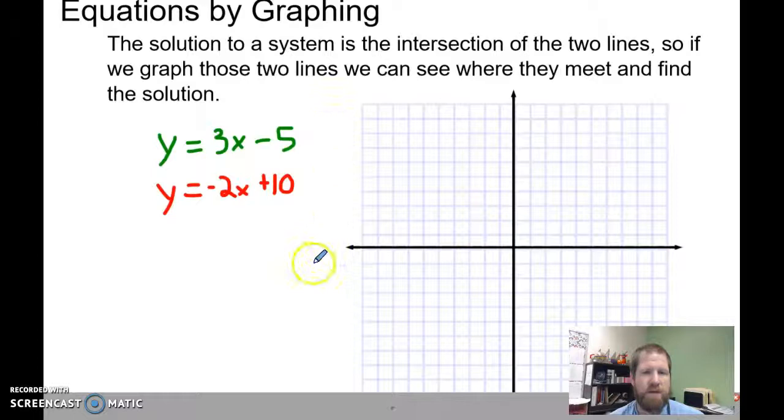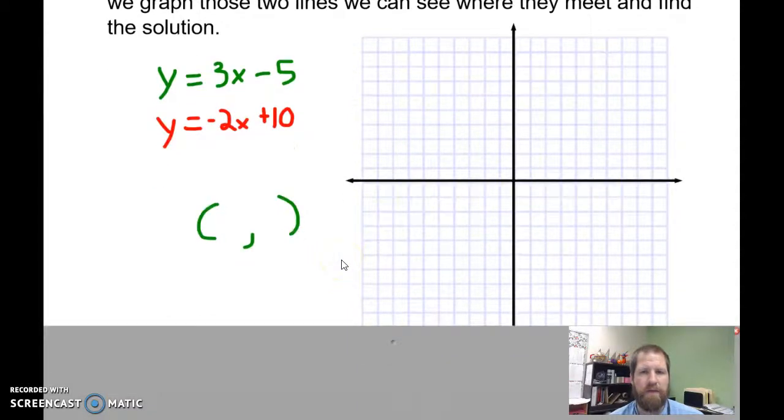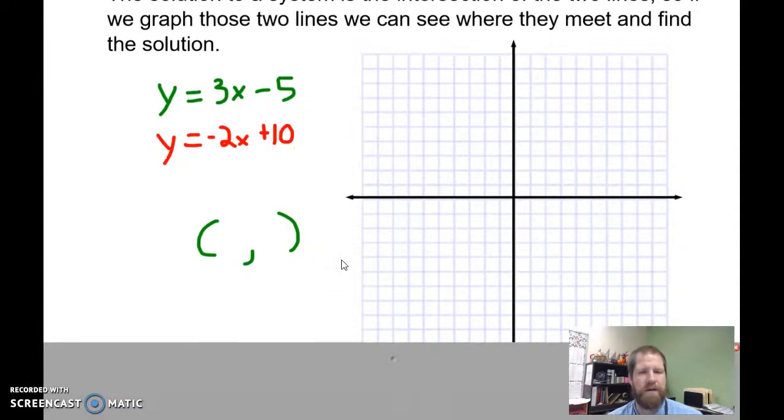We're still looking for the intersection where those two lines meet. That's going to be our solution, which is always an ordered pair - one x value, one y value. Or, as we looked at in the last video, we might have infinite solutions or no solutions, depending on if our lines are parallel or if they overlap.